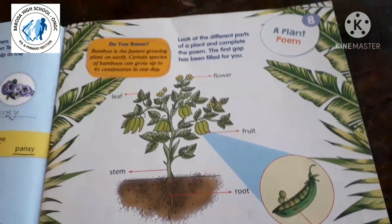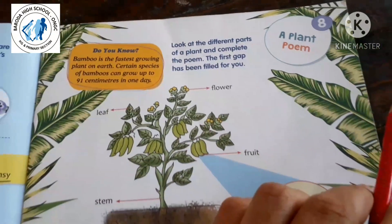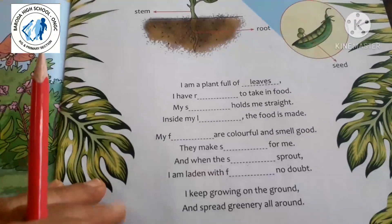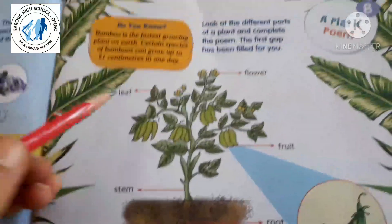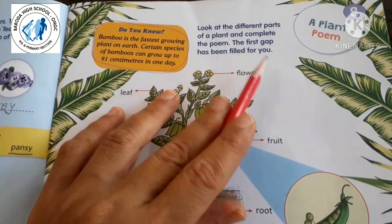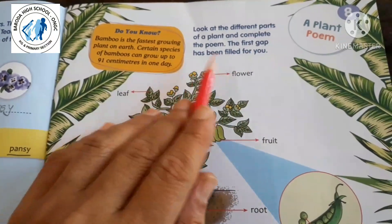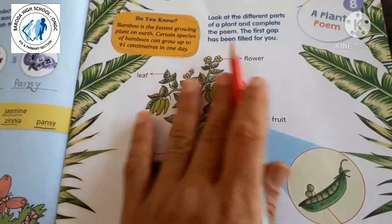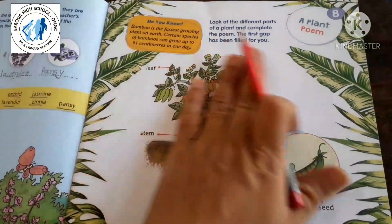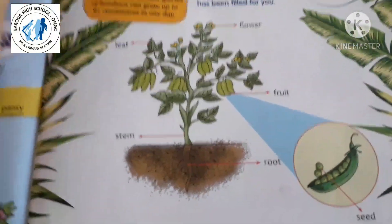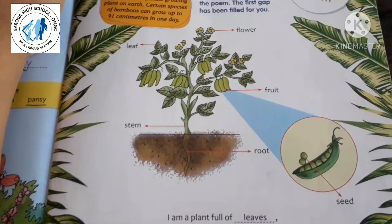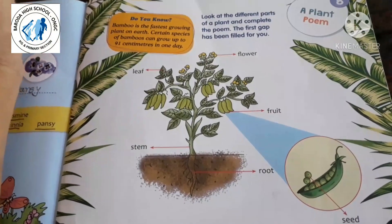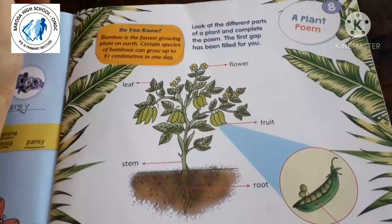The next lesson in GK is a plant poem. Here, on page number 9, there is one poem on plants. Look at the different parts of a plant and complete the poem — the first gap has been filled for you. We have to first observe the parts of plants and then complete this poem. You have already learned different parts of a plant in EVS, but let's see here again.